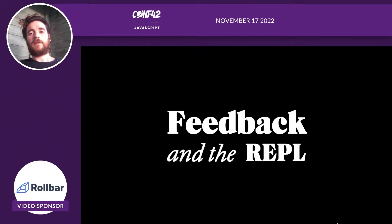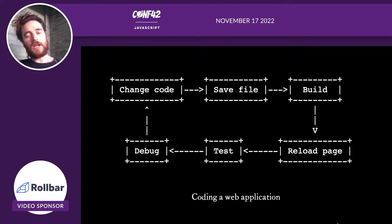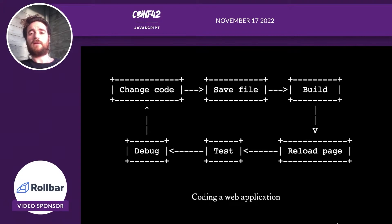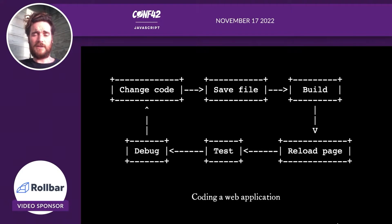I'm going to be talking today about the feedback loops that we experience as programmers. This is a pretty typical feedback loop for a web developer today. You might start off changing some code, then save the file you're working on, rebuild your application — if you're lucky, only the part you've been working on gets rebuilt because that'll be faster. Then reload the page, and again, you might be lucky and only reload the portion of the page you've been working on. Then you need to have a test, have a poke around, and see if what you did worked.